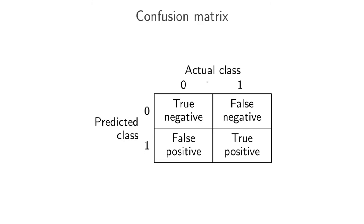In other cases, something that is negative might be predicted as positive - that's called a false positive. We might also have an actual positive input that our model correctly predicts as positive - that's a true positive. And our model might predict that something actually positive is negative - that's a false negative. The confusion matrix records the counts of true negatives, false negatives, false positives, and true positives in each of its four cells, and based on those numbers we define the finer-grained metrics.